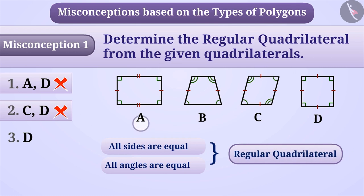In figure A, all the angles are equal, but all the sides are not equal. Therefore, it is not a regular quadrilateral. In figure B, neither all the sides are equal, nor all the angles are equal. Therefore, it is also not a regular quadrilateral.